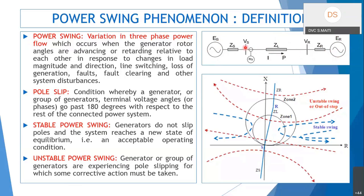When discussing power swing, think of the network in terms of equivalent generators. A stable power swing is one where the generators do not slip poles and the system reaches a new state of equilibrium — an acceptable operating condition different from the previous one.